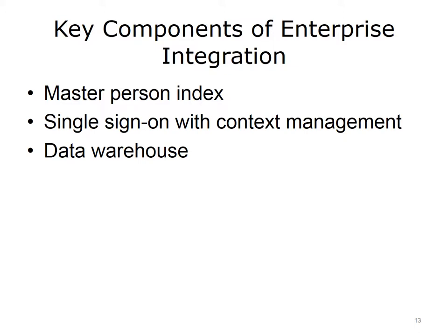HIMSS identified the following key components of enterprise integration. Master Person Index: a database and rules engine containing a unique identifier for every patient or person in the enterprise, ensuring a complete medical record can be obtained for patient safety. Single Sign-On with Context Management: permits a user to enter one name and password to access multiple applications, with context management passing the patient identifier from one application to another. Data Warehouse: permits access of information across the enterprise through a central data repository, with more recent functionality delivered by just-in-time coordinated access across multiple databases — known as threading — allowing on-demand compilation of patient records.